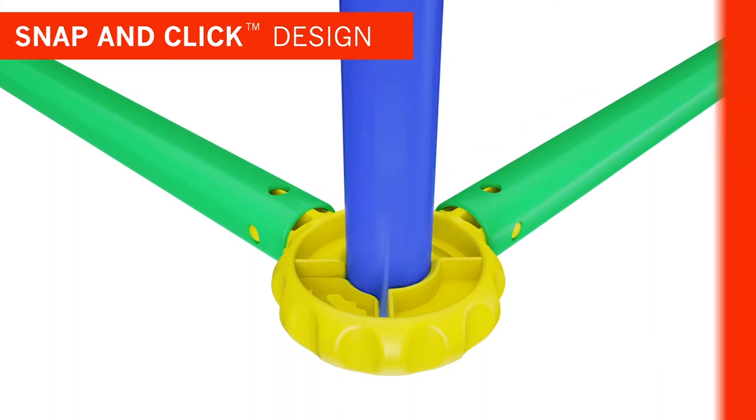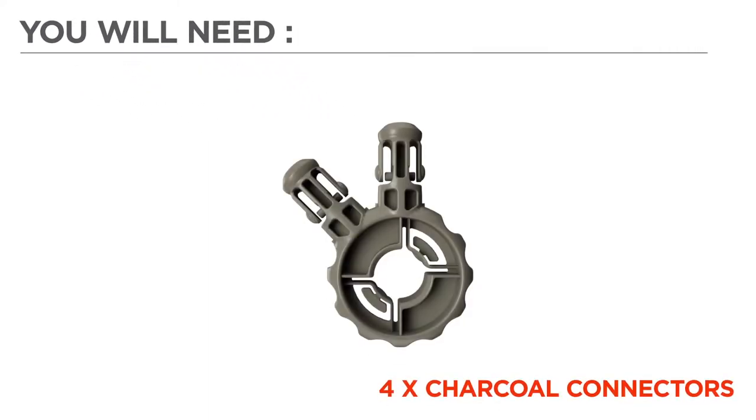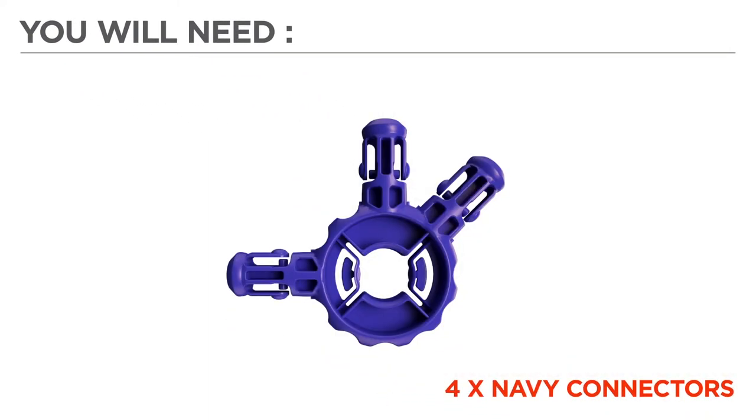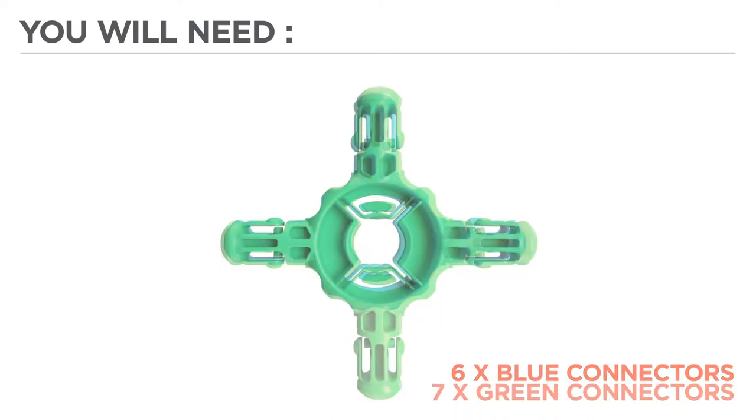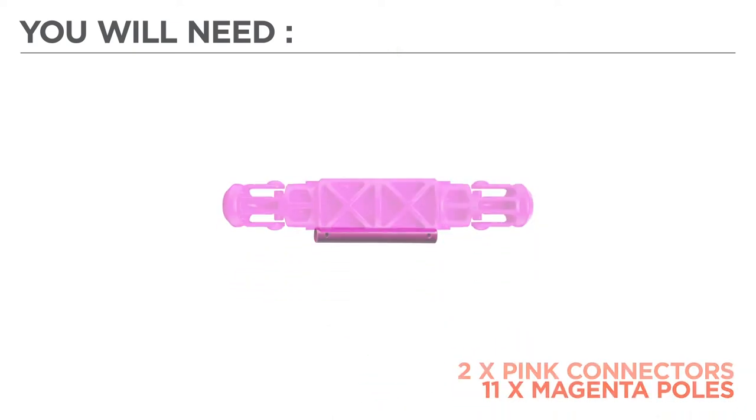Now before we begin, let's gather the color-coded parts needed for your build: 4 charcoal connectors, 4 navy connectors, 6 blue connectors, 7 green connectors, 2 pink connectors.